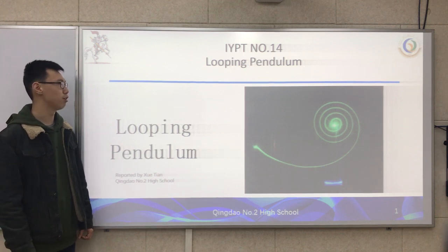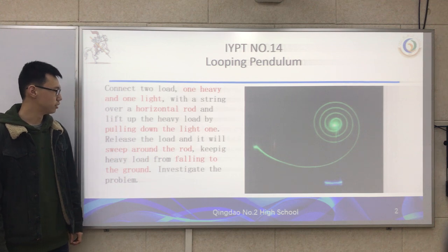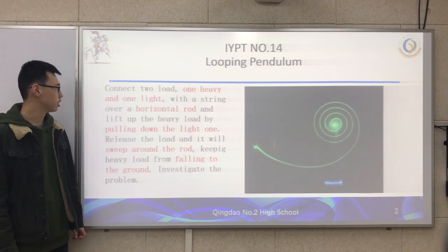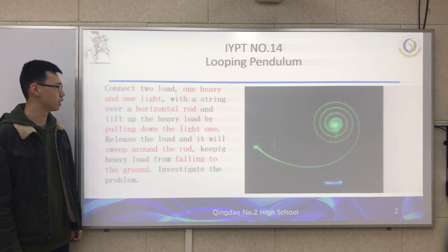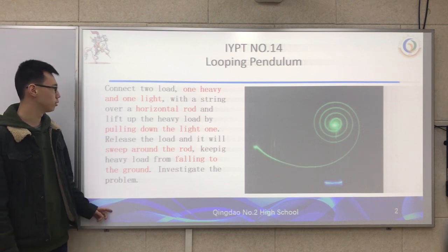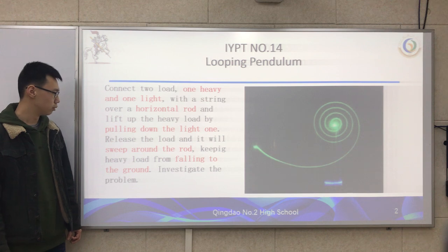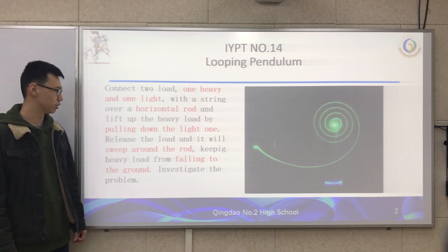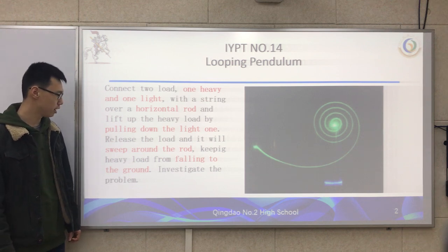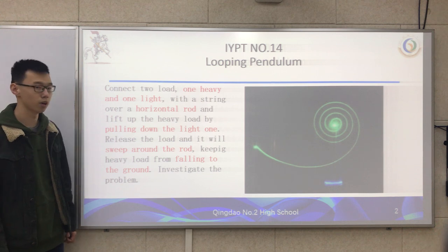Today, I am going to report the IRPT No. 14 problem: looping pendulum. This is the problem statement. Connect two loads, one heavy and one light, with a string over a horizontal rod, and lift up the heavy load by pulling down the light one. Release the load and it will sweep around the rod, keeping the heavy load from falling to the ground. Investigate the problem.